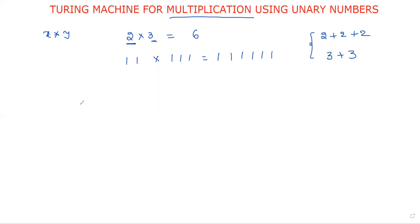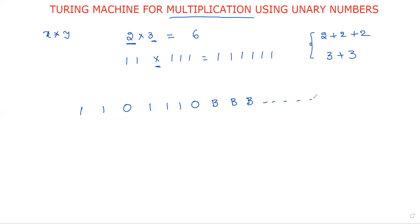Now what is the logic we are going to follow? The logic is very simple — once you understand the logic it is very simple to construct the Turing machine design. The two numbers are separated by using zero: one one zero one one one. After that we have any number of blank symbols, but before writing the blank symbol to separate the input from the blank, I am using a zero.